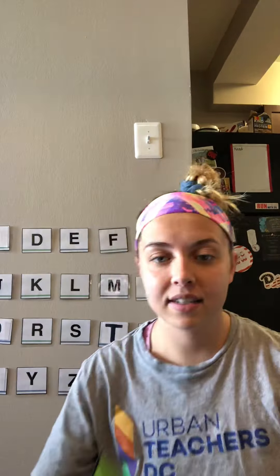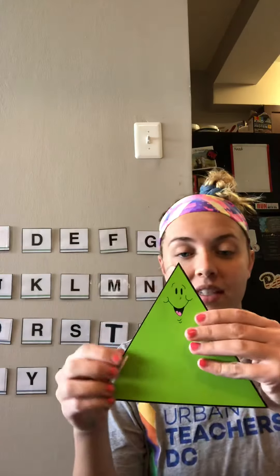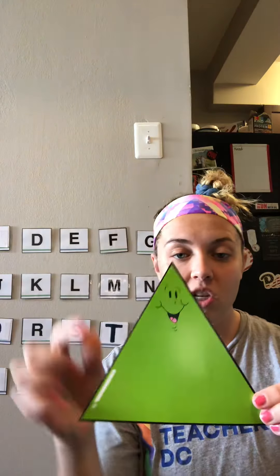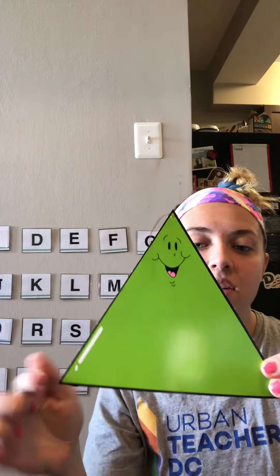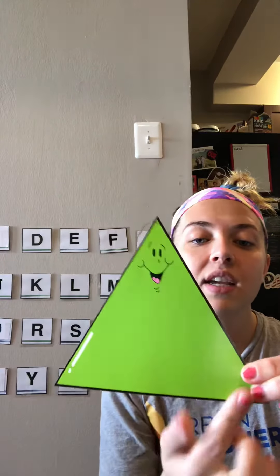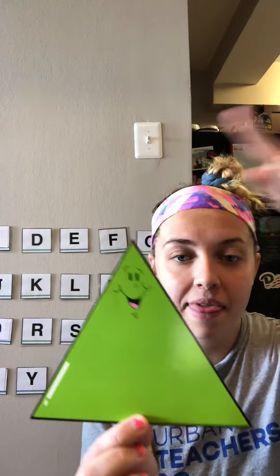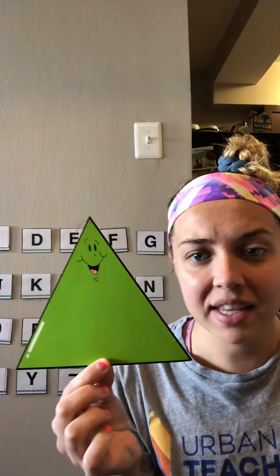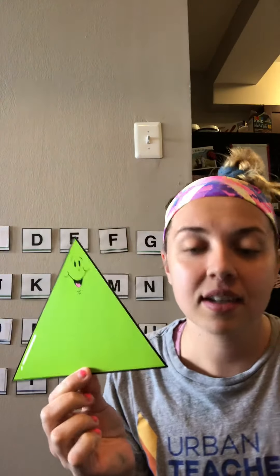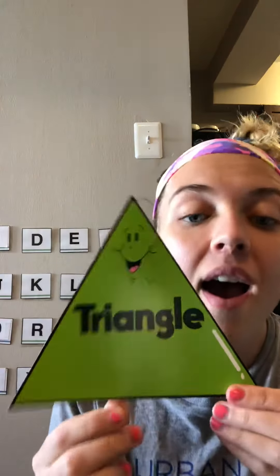Next, we have this green shape. It has three sides and three points. What shape is this? A triangle.